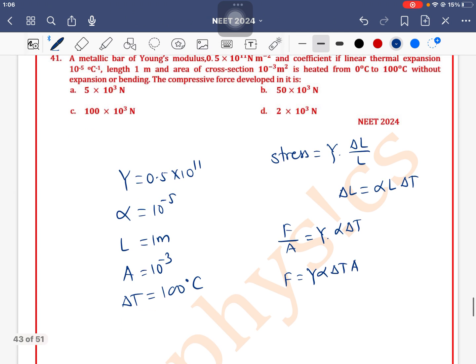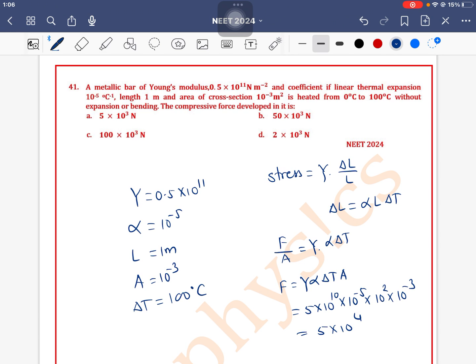Y is 0.5 × 10^11 which means 5 × 10^10. α is 10^-5, change in temperature is 10^2, area is 10^-3. So 5 × 10^(10-5+2-3) = 5 × 10^4 which means 50 × 10^3. Option B is correct.